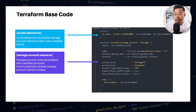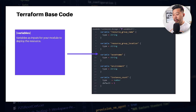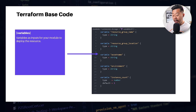Here's the variables file, which defines what the inputs will be for this module. I've got resource_group_name, resource_location, asset_name, environment, and instance_count. I set a default of one for instance_count so that if you don't specify it, it always deploys at least one storage account. These are the unique attributes that differentiate a storage account deployment — everything else can be generalized.